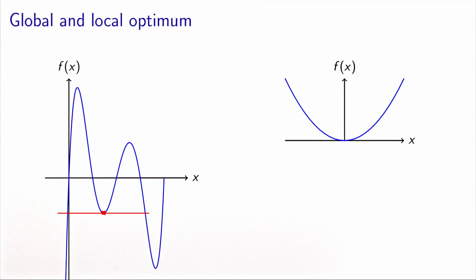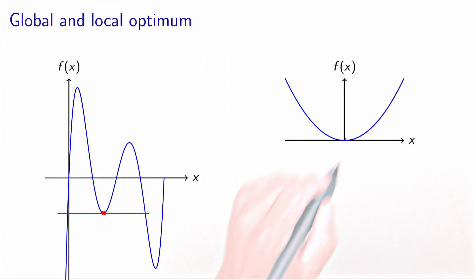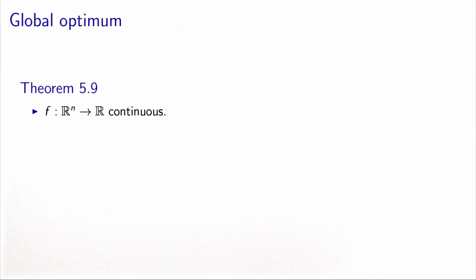So it's important to keep in mind that the conditions apply for local optima, not global optima. When the function is convex, like in the example on the right, a local optimum is also a global optimum. In that case, when we apply the optimality conditions for a local optimum, they automatically apply for a global optimum as well because the function is convex.